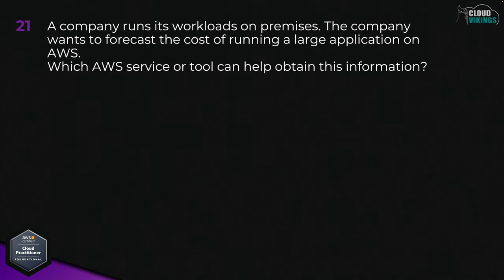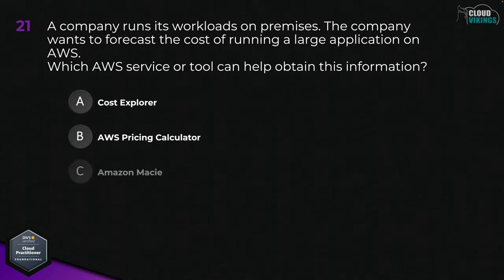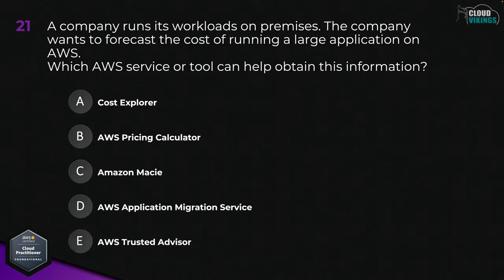Question twenty-one: a company runs its workloads on-premises and wants to forecast the cost of running a large application on AWS. Which AWS service or tool can help obtain this information? Options are: A, Cost Explorer; B, AWS Pricing Calculator; C, Amazon Macie; D, AWS Application Migration Service; or E, AWS Trusted Advisor. The correct answer here would be B, the AWS Pricing Calculator.